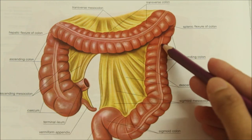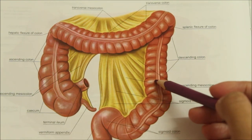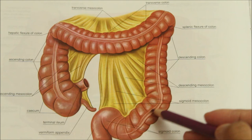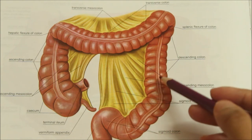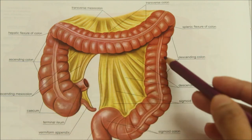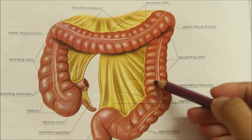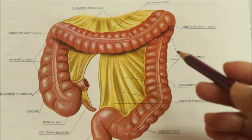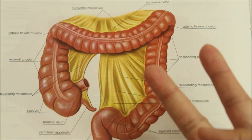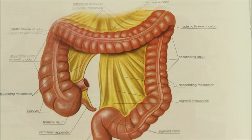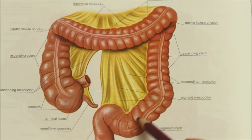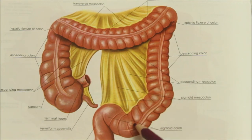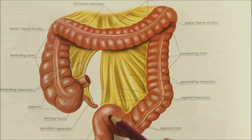Moving on to the descending colon: it is about 25 cm long and extends from the left colic flexure to the sigmoid colon. The descending colon is narrower than the ascending colon. Anteriorly, it is related to coils of the intestine. Posteriorly, it is related to the transversus abdominis, quadratus lumborum, iliacus, and psoas muscles. The sigmoid colon is about 37.5 cm long and extends from the pelvic brim to the third piece of the sacrum, where it becomes the rectum.